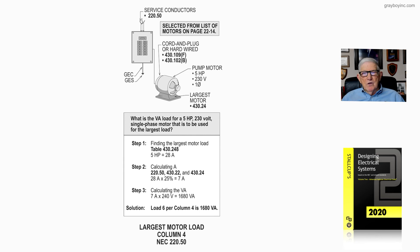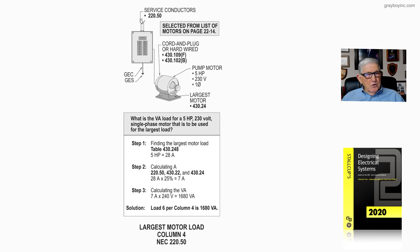To convert that to VA, we take 240 volts — single phase motor — times 7 amps, and we come up with 1,680 VA. So basically, load 6 in column 4 is 1,680 VA.